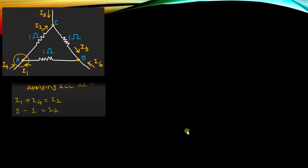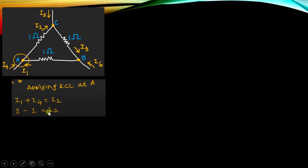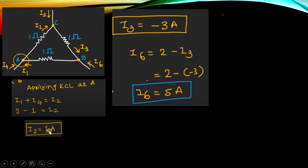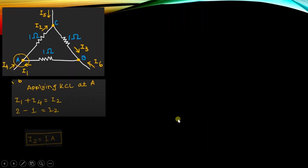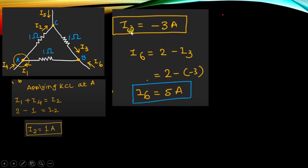Next, we apply KCL at node A. The equation becomes I1 plus I4 equals I2, which gives us 2 minus 1 equals I2, so I2 equals 1 ampere. After finding I2, we can determine I3. Using the equation I3 equals I2 plus 4, substituting the value of I2, we find I3 equals minus 3 ampere... wait — using the correct relation, I3 equals I2 plus 4 gives I3 as minus 3 ampere.